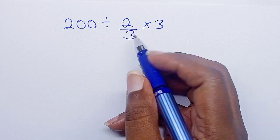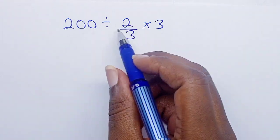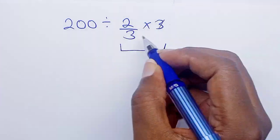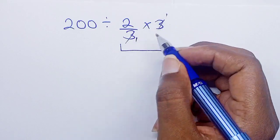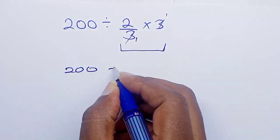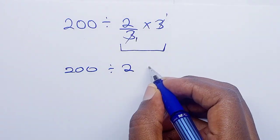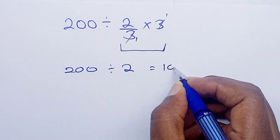So we have 200 divided by 2 over 3 times 3. When you work this out, this is 1, so we shall have 200 divided by 2, and 200 divided by 2 equals 100.